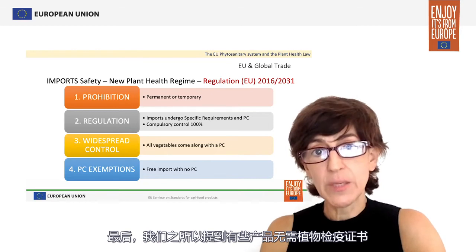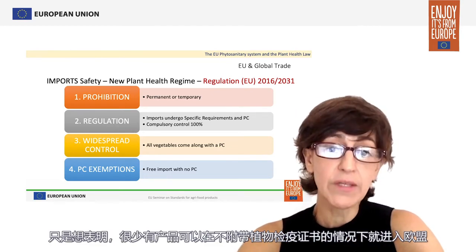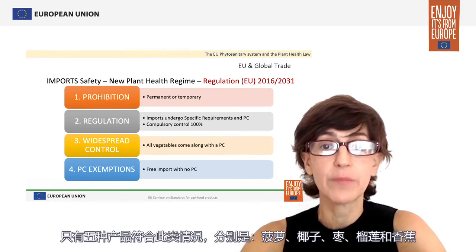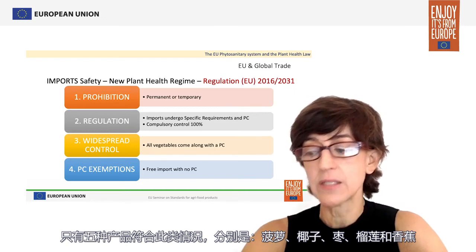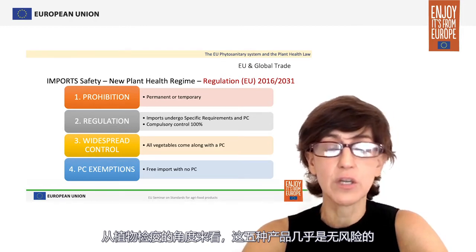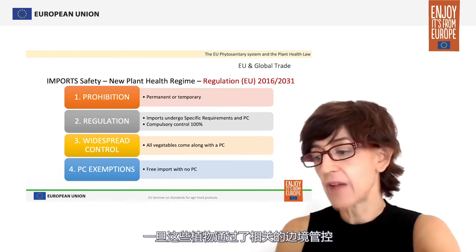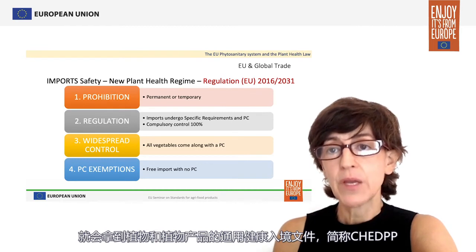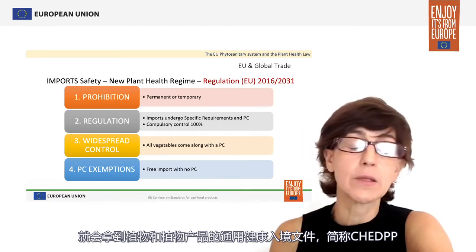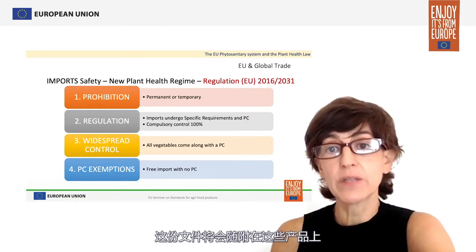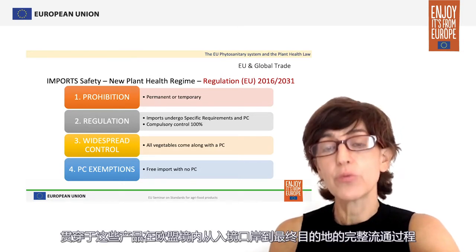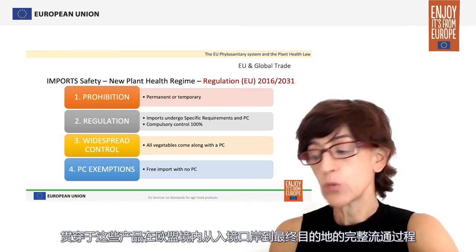In terms of exemptions, the list of products exempt from entering the EU with a phytosanitary certificate is extremely short. There are only 5 products: the pineapple, the coconut, the dates, the durian, and the banana. They are considered to be practically risk-free from a phytosanitary point of view. Once the plants have passed the relevant border controls, they will be issued the Common Health Entry Document for Plants and Plant Products, the CHEDPP, which will accompany these products across all their movement through the European Union territory from the point of entry to the final destination.